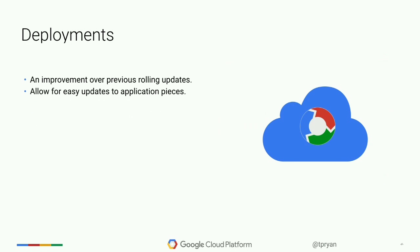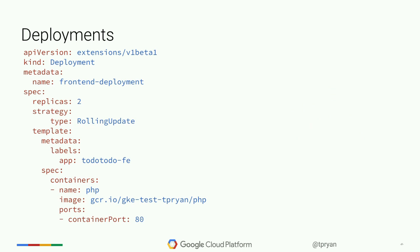Deployments are an improvement over previous rolling updates. You want to update containers slowly over time. In the past it was done imperatively; now you change your desired state and make it happen. It's a lot easier for updating. Deployments are simpler than the replication controller config, which we like. It also has the pod specified in it.